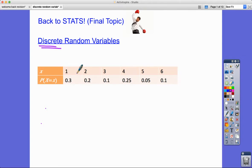Discrete means that we've got some countable possible values. So in this case, we've got the numbers 1, 2, 3, 4, 5, 6.